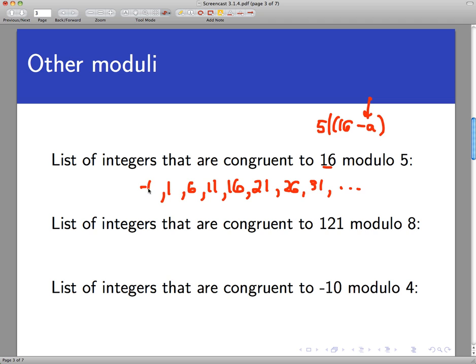So negative 4, negative 9, and so forth. Keep your eye on this number right here, the smallest non-negative integer in this list. That will become important.